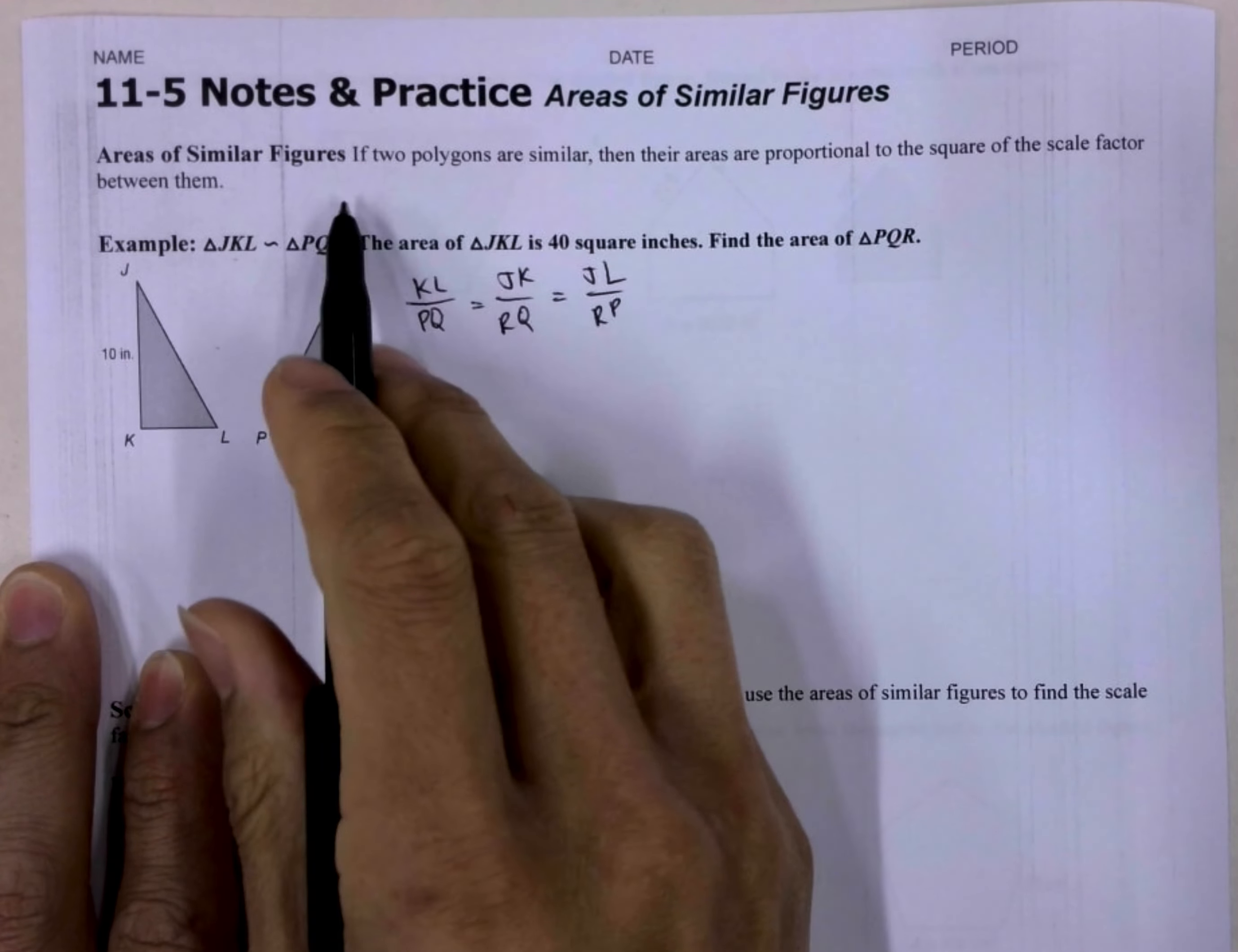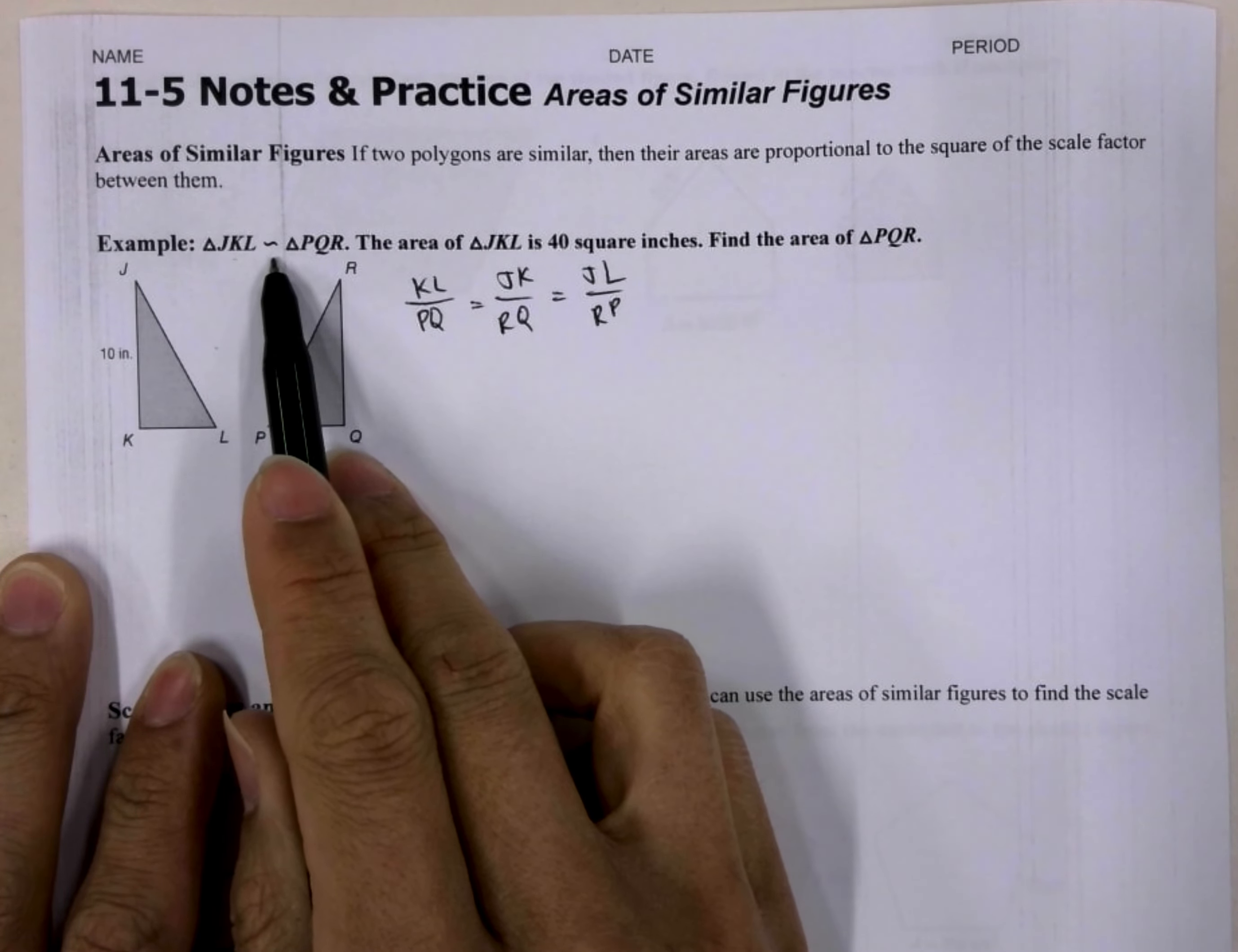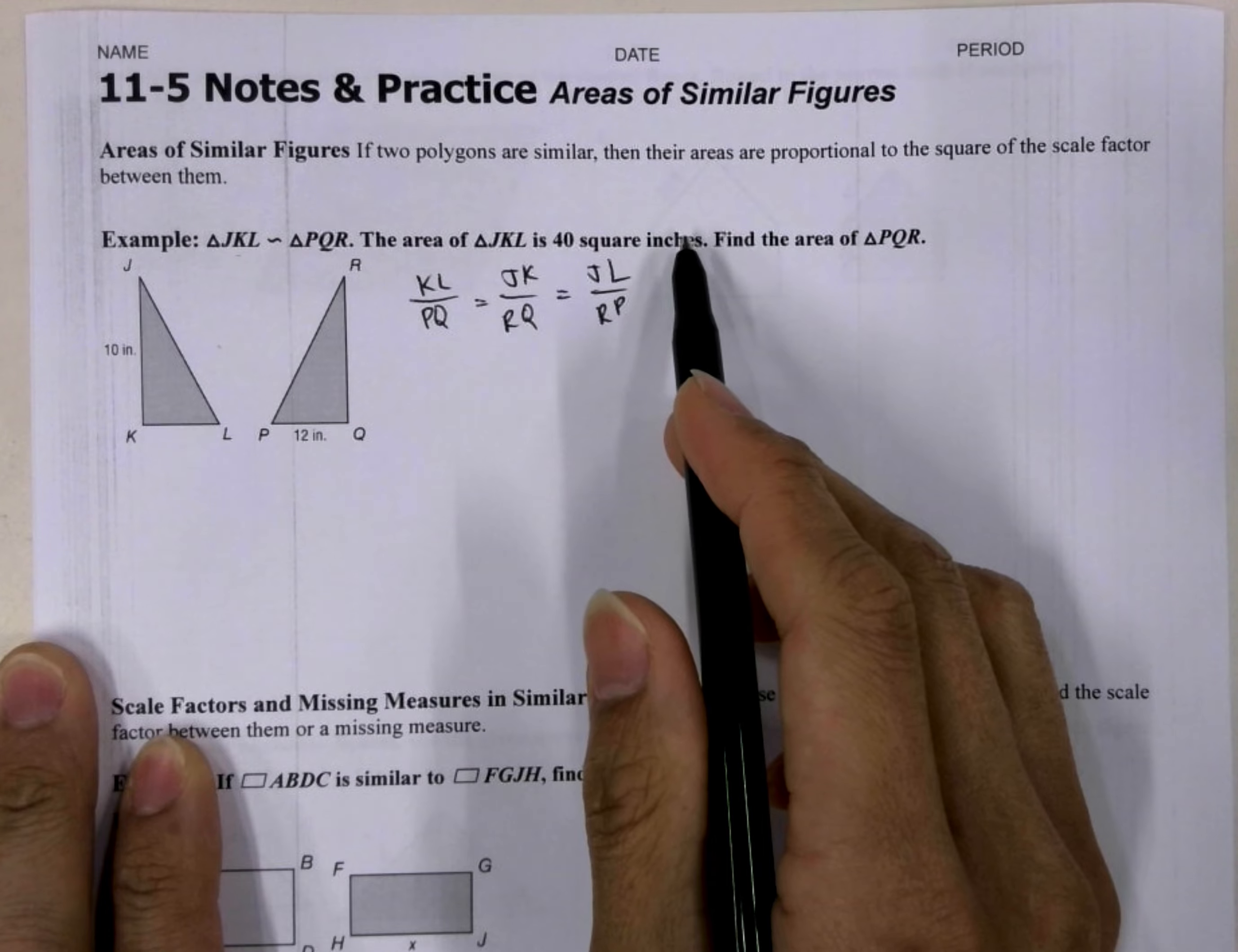So then if they're similar, then that means that this equation here holds to be true. So if we have two polygons that are similar, which is that symbol right there, they're saying that this triangle is similar to this triangle. Then their areas are proportional to the square of the scale factor between them.